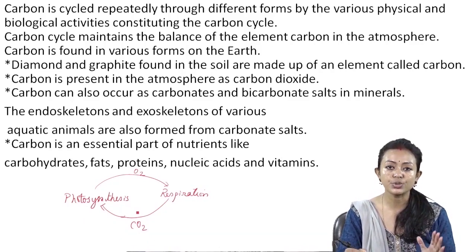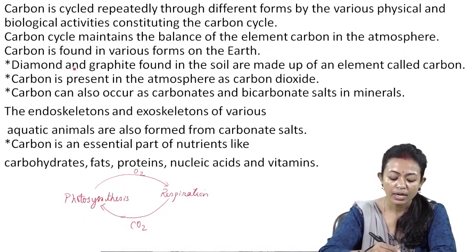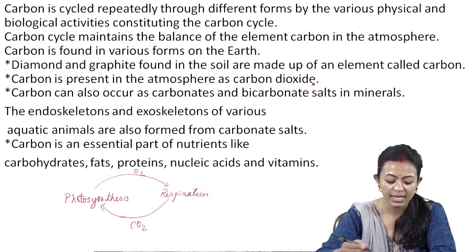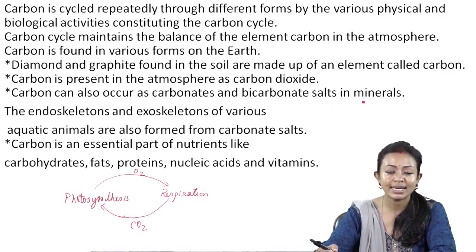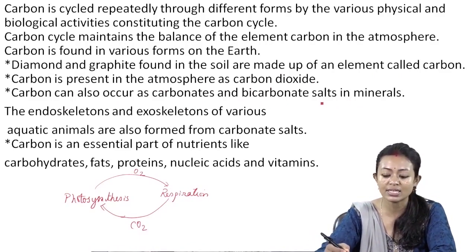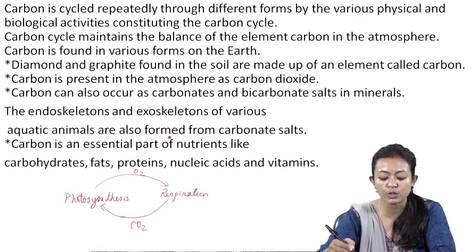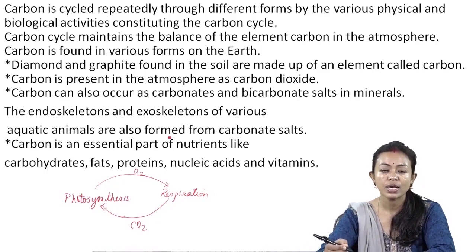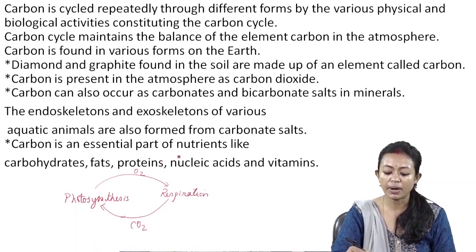The carbon cycle maintains the balance of carbon in the atmosphere. Carbon is found in various forms: diamond and graphite found in the soil are made up of carbon. Carbon is present in the atmosphere as carbon dioxide, and also occurs as carbonates and bicarbonates in salts and minerals. Seas and oceans contain high amounts of these carbonates and bicarbonates. The endoskeleton and exoskeleton of aquatic animals are also formed from carbonate salts — shells and bones also contain lots of carbonates.